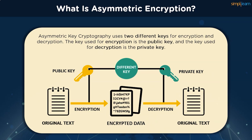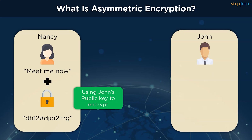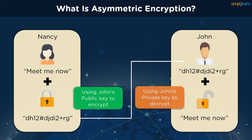The public key, known to everyone, cannot be used to decrypt messages, and the private key, which can decrypt messages, need not be shared with anyone. The sender and receiver can exchange personal data using the same set of keys for as long as needed. In this example, we have two people, Nancy and John. If Nancy wants to send a message to John, John's public key should be used to encrypt the information. The ciphertext is then transferred to John, who can use his private key to decrypt the data and get the plain text back. This highlights how we have overcome the problem of key sharing with asymmetric encryption.